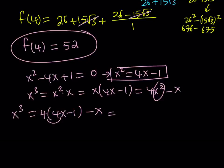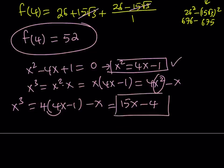Again, this is x cubed. And from here, I get 16x minus x, which is 15x minus 4. So if I'm able to write x squared as 4x minus 1, then x cubed can be written as 15x minus 4. Let's see what that means.